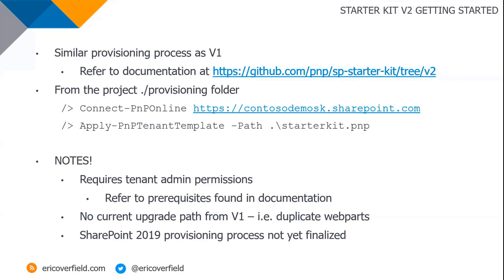There is no current upgrade path from V1 to V2. It's mainly because of the duplicate web parts — if you install this over an existing installation, you're going to get two copies of all the web parts. We went with new IDs because we had to create new web parts. The 2019 provisioning process is not yet finalized — if you're looking to install this on 2019 today, it's not there. It's at the top of the backlog, but still in the backlog.